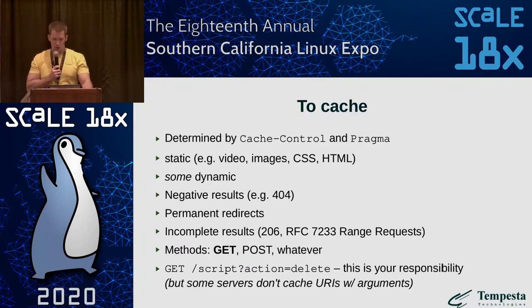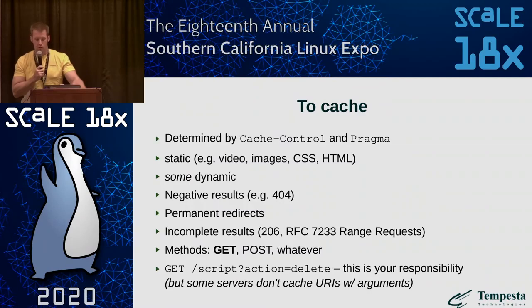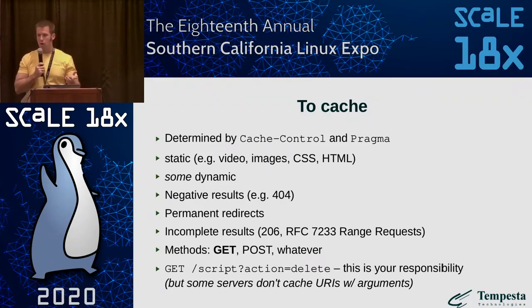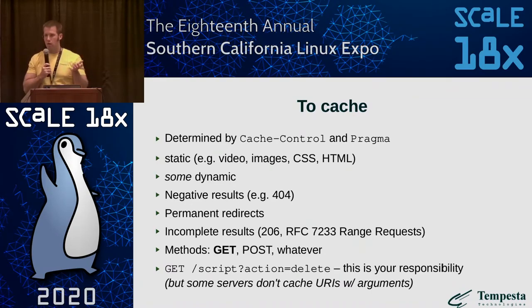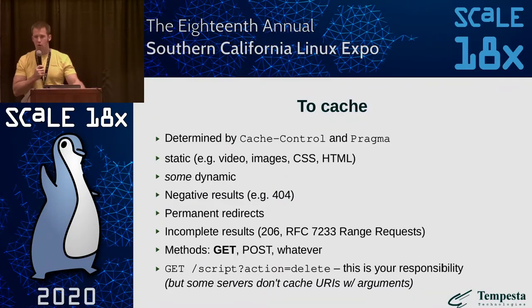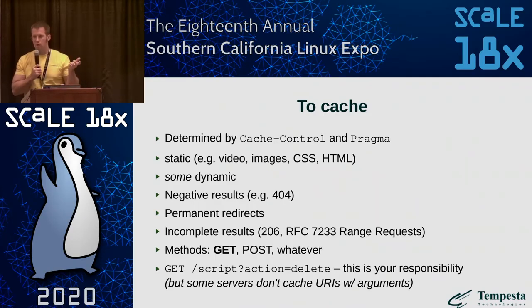So we come to the cache. There are many settings for caching particular data: Cache-Control and Pragma headers. HTTP proxies can also make decisions based on resource extension, for example JPEG or CSS files, caching based on suffixes. It's also good to cache negative results like error codes and permanent redirects. Usually we cache GET requests. However, if a web developer uses GET with intrusive logic — like deleting content — then we can cache the result and the logic will be broken.